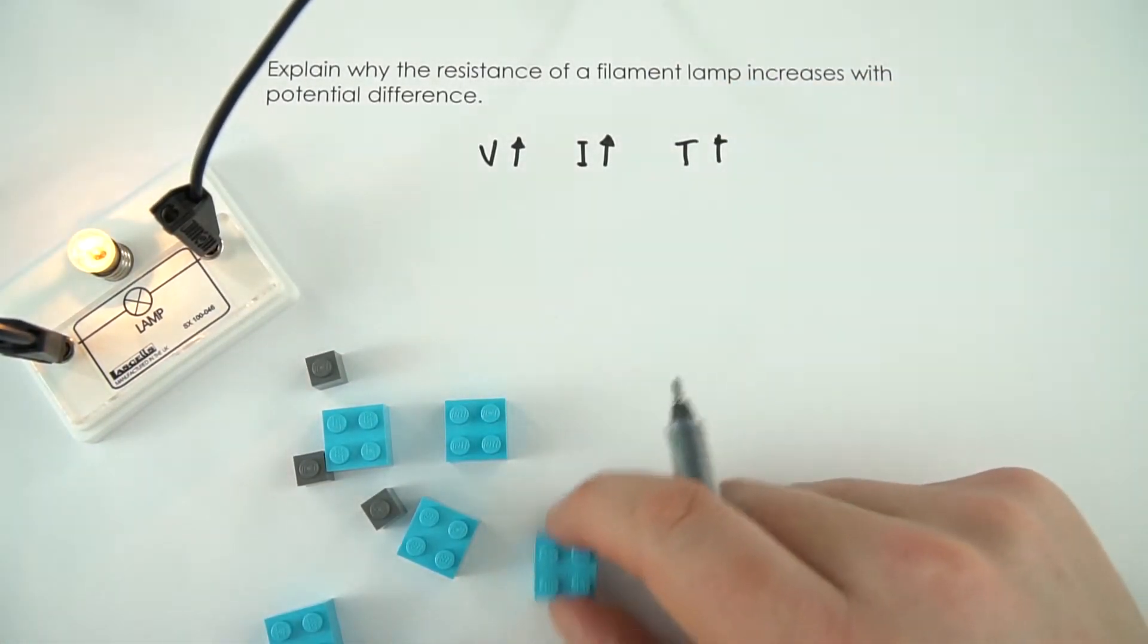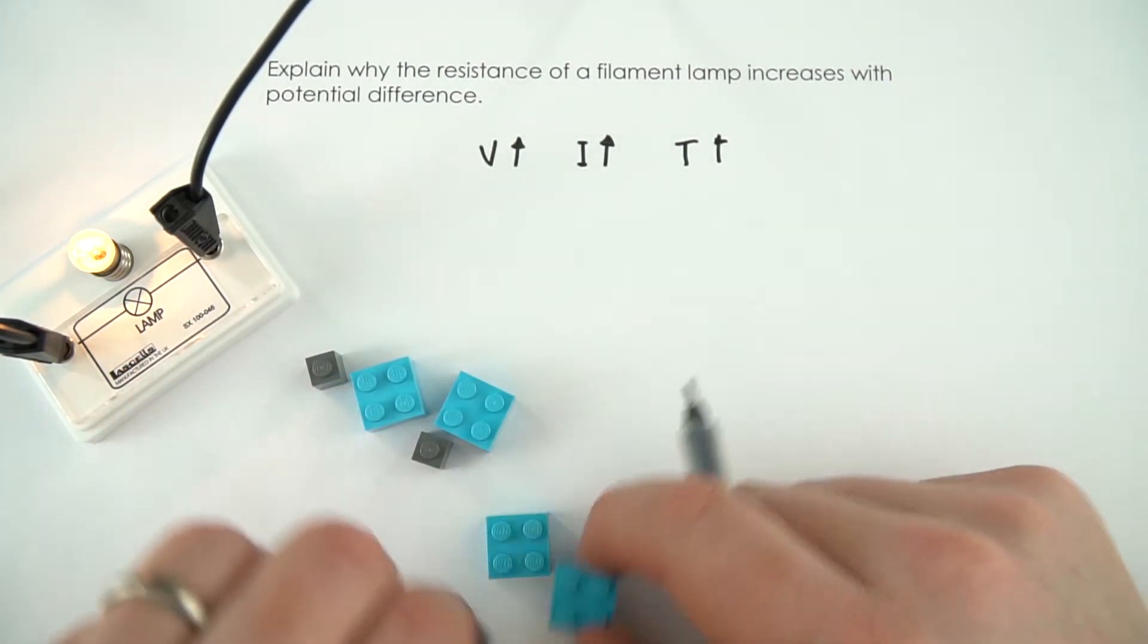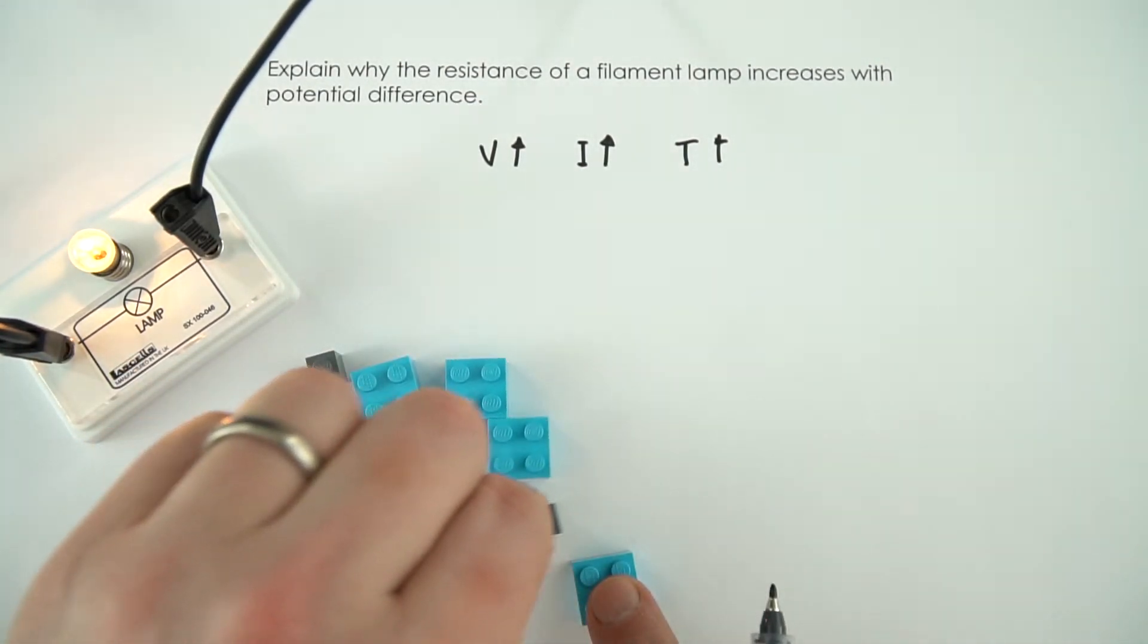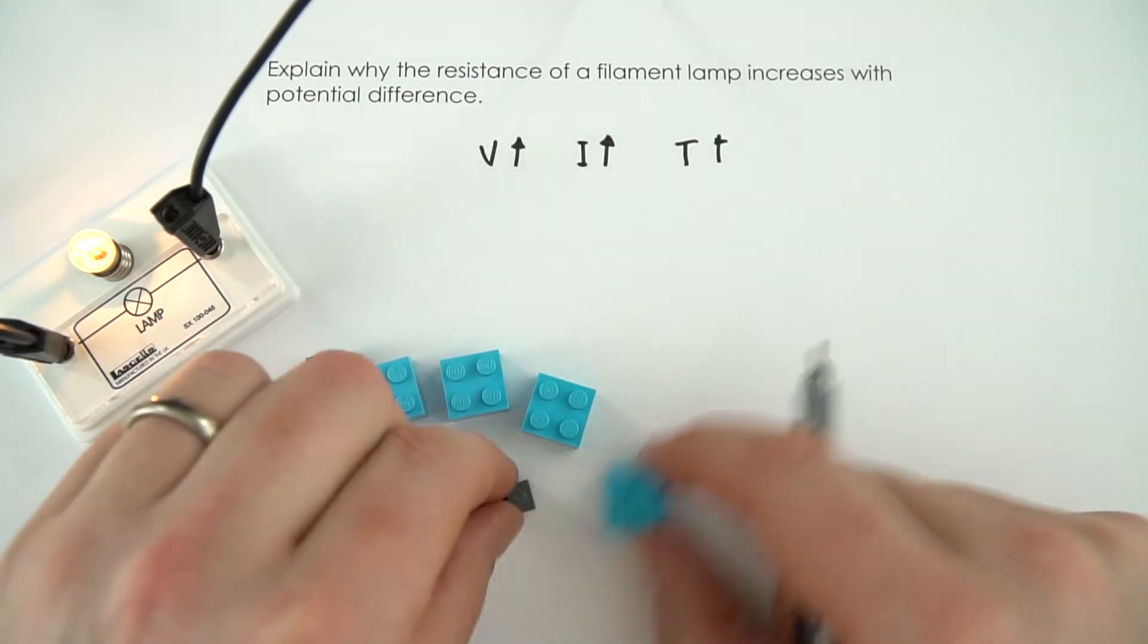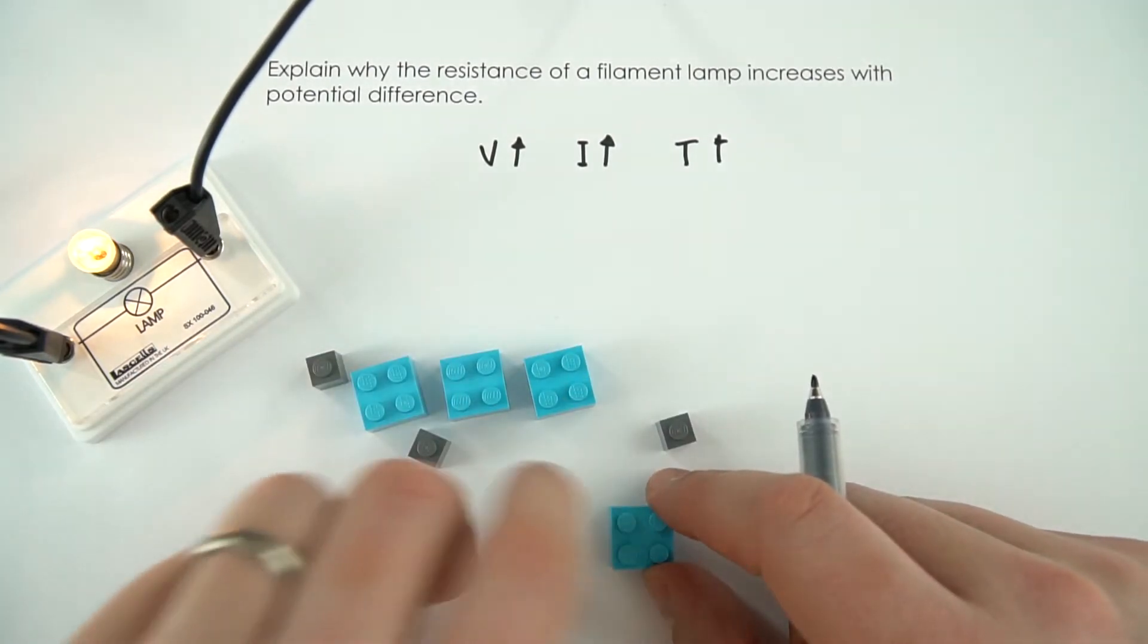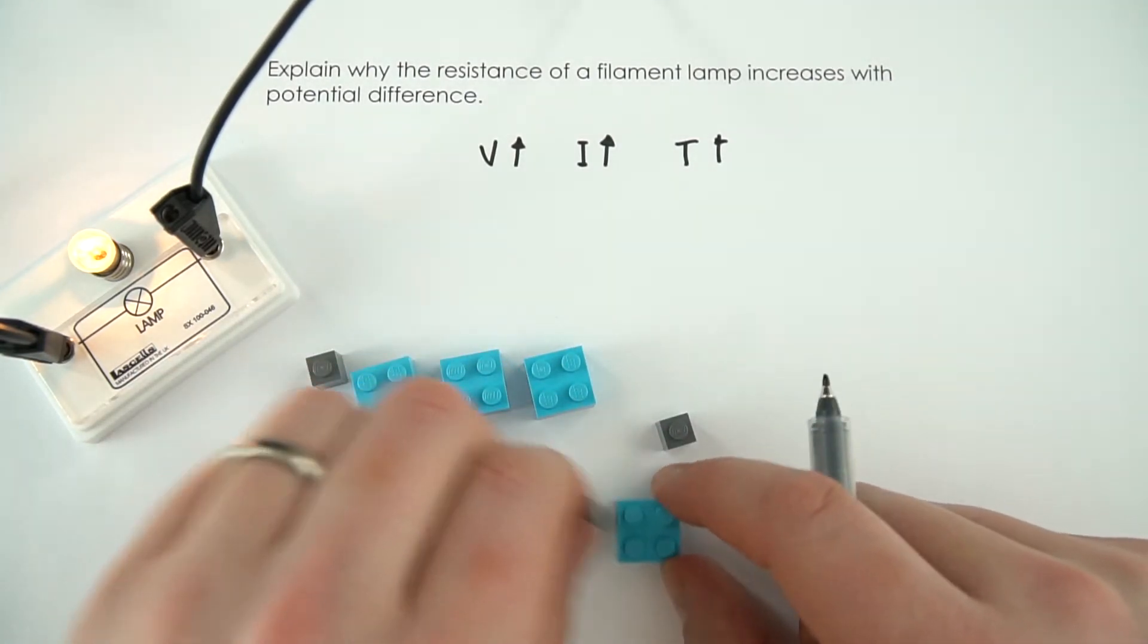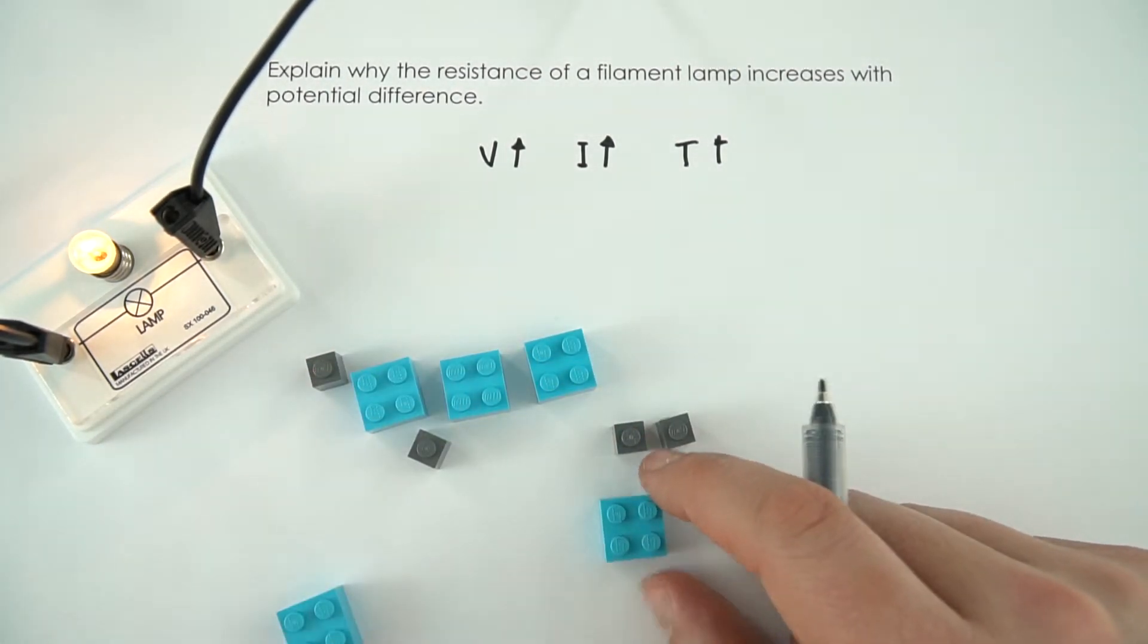Because these things are now vibrating more, when you have more electrons flowing through this, rather than them just kind of moving straight by and having this kind of easy route through the metal, because the lattice is vibrating, it's harder for the electrons to get through. They still get through, there's still a current flowing, but it does mean that there's more resistance to their motion as they go through that metal.